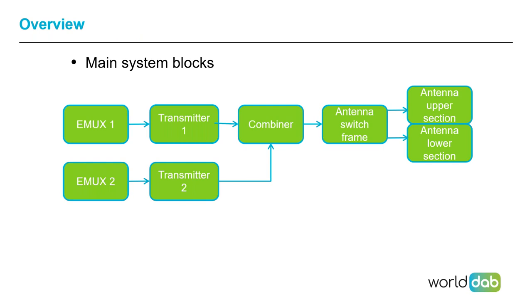So the main system blocks: we start with the EMUX — we heard a lot about that yesterday — and we feed an ETI stream to a transmitter, which then produces the RF output signal. That goes into either a filter or combiner and then onto an antenna switch frame. If we have a large antenna with two sections, there may not be a switch frame. And of course, if we have more than one transmitter — such as in Sydney where we have three ensembles — we need a combiner system.